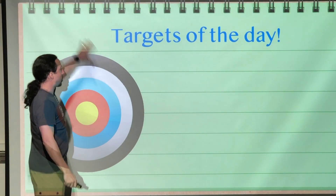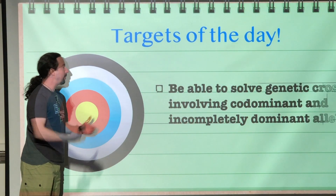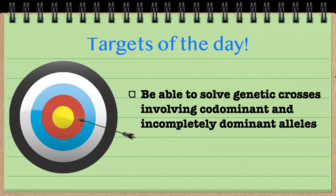The target of the day is to be able to solve genetic crosses involving co-dominant and incompletely dominant alleles. That's our goal.